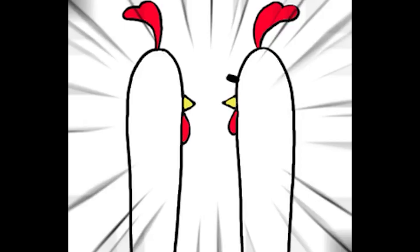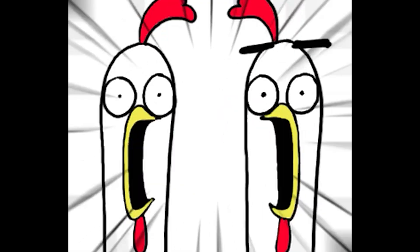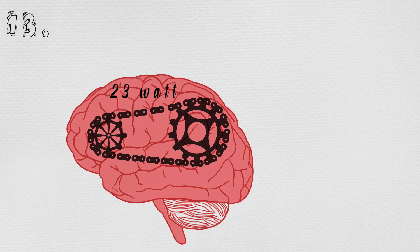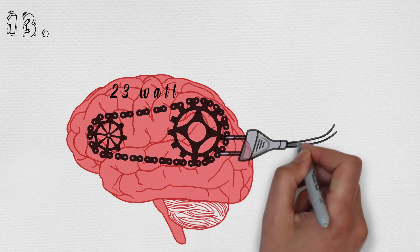Number twelve: Ek rice ke daane ke barabar brain tissue mein ek lakh neurons aur one billion synapses hote hain. OMG.